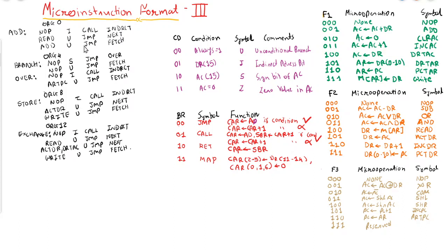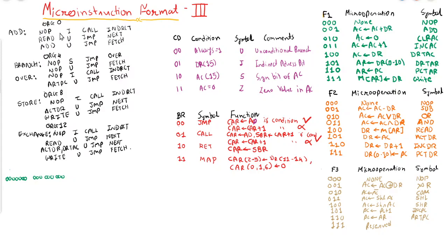As you can see, we start with the first line: org 0, meaning the address of the first instruction will be 0. We are having a 7-bit address, so it is 7 zeros — 0000000. The first operation is NOP. NOP belongs to all categories, so there is no operation for any field. In all fields there will be zeros: 00000000000.